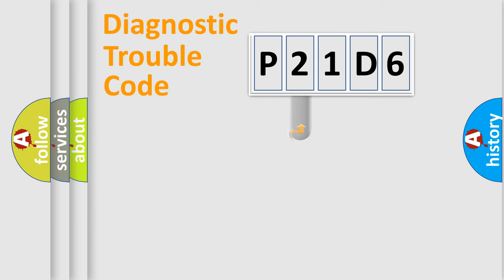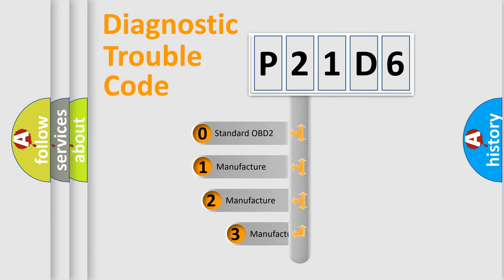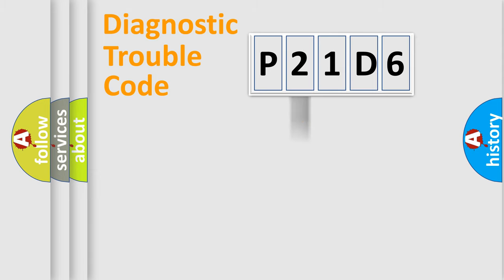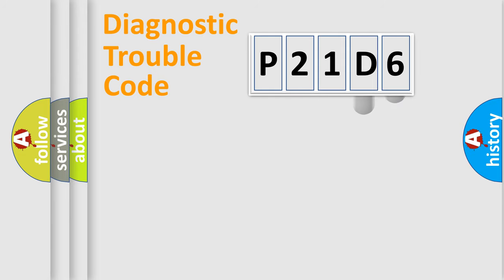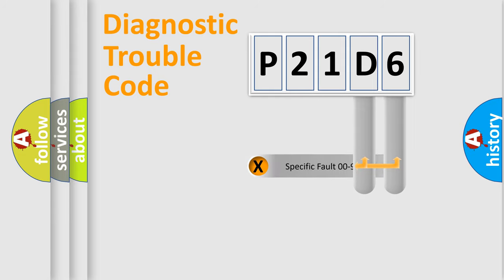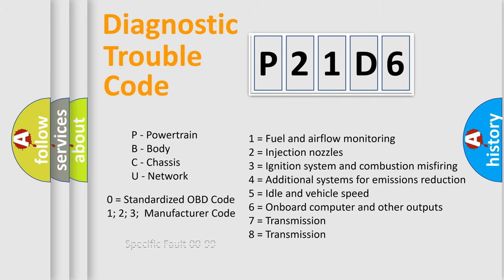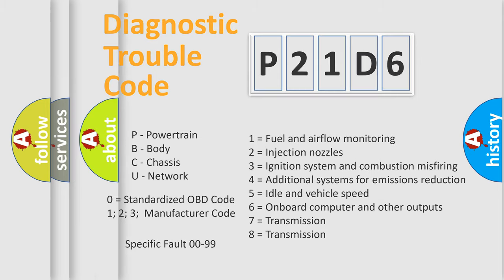This distribution is defined in the first character of the code. If the second character is expressed as zero, it is a standardized error. In the case of numbers 1, 2, 3, it is a more specific expression of a car-specific error. The third character specifies a subset of errors. The distribution shown is valid only for the standardized DTC code. Only the last two characters define the specific fault of the group. Such a division is valid only if the second character code is expressed by the number zero.